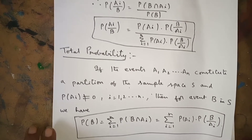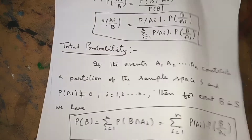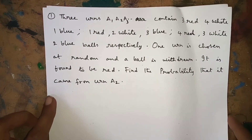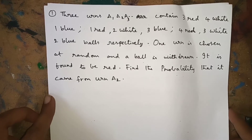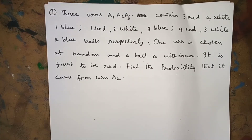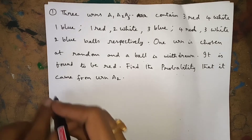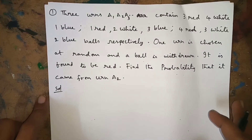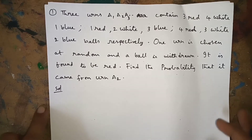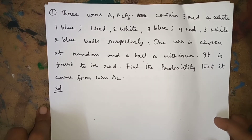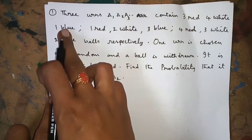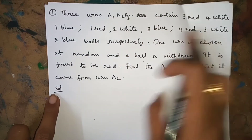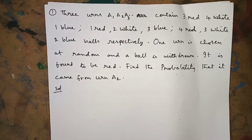Now we will see the first problem in Bayes' Theorem. Read the problem carefully — Bayes' Theorem problems are lengthy. Read once, twice, or as many times as needed to identify what is given and what we have to find. Problem: There are three urns A₁, A₂, A₃. Urn A₁ contains 3 red, 4 white, 1 blue ball.